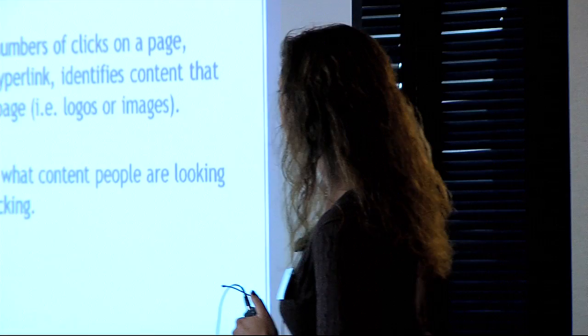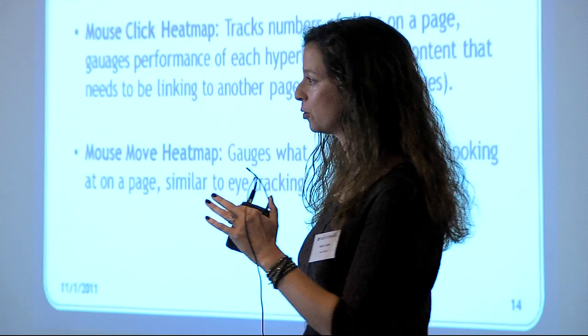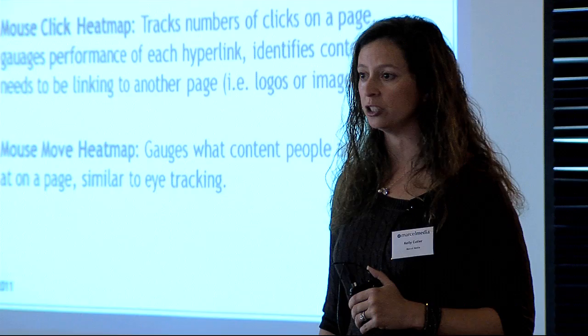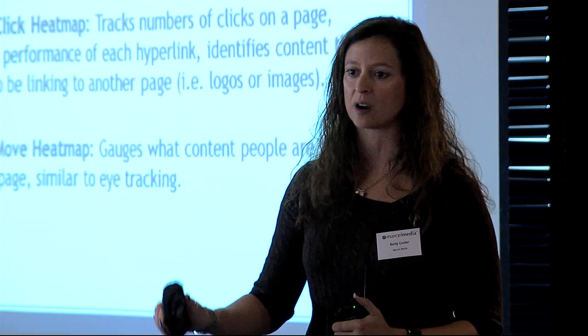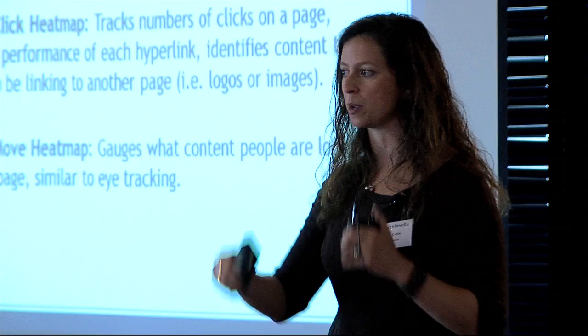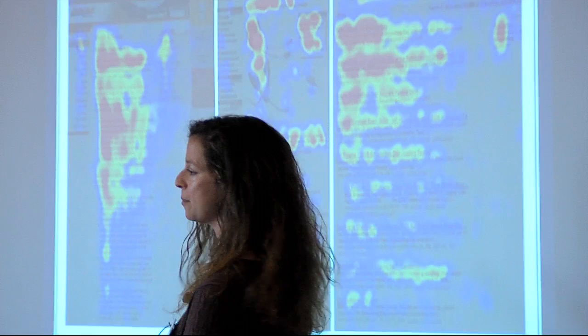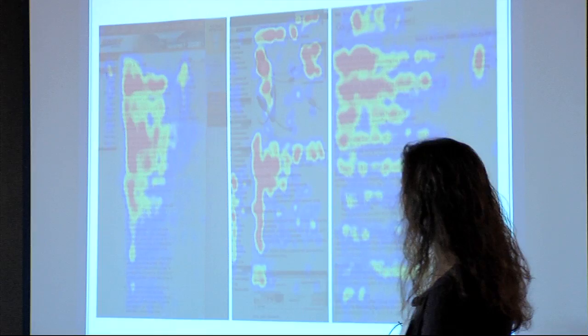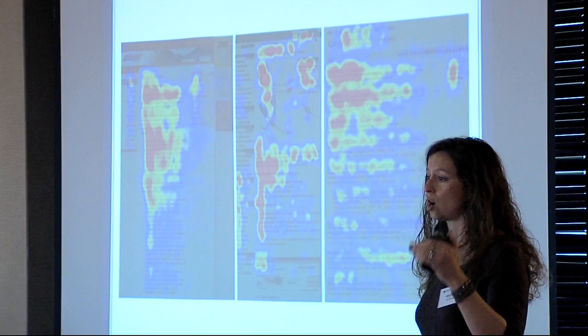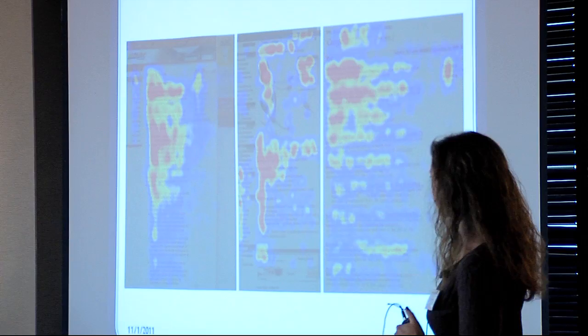We can track when people are moving their mouse over areas, which subconsciously we often do when reading information on a website — moving the mouse around even when not clicking. That helps us understand where people are focusing. We have examples of heat maps, and it's very common to see activity concentrated in that top-left area, which is typically where people's eyes go.